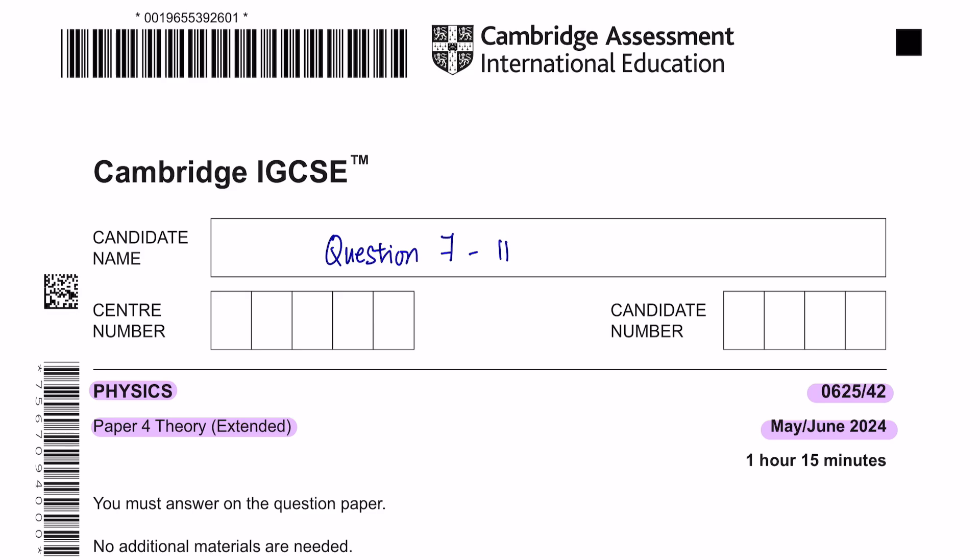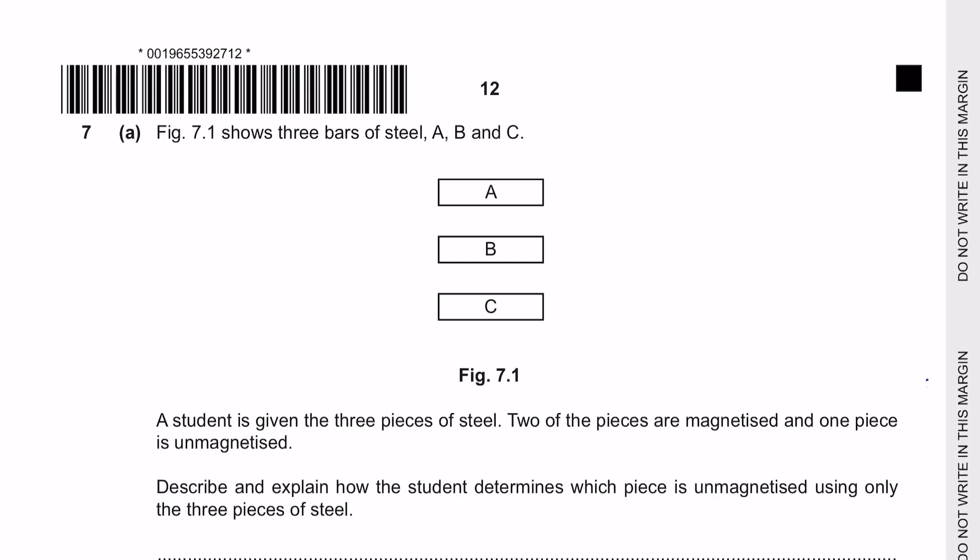Hey guys, welcome to Learn Today IGCSE. This is the second part for the Paper 4 Theory from May June 2024 examinations. Question 7, part A. Figure 7.1 shows three bars of steel A, B and C.